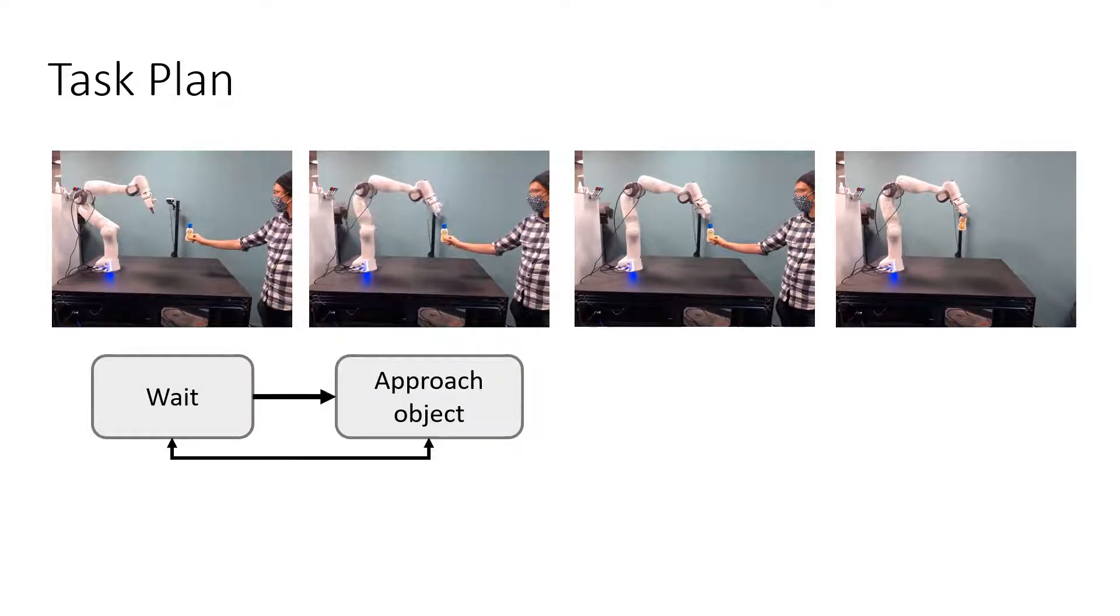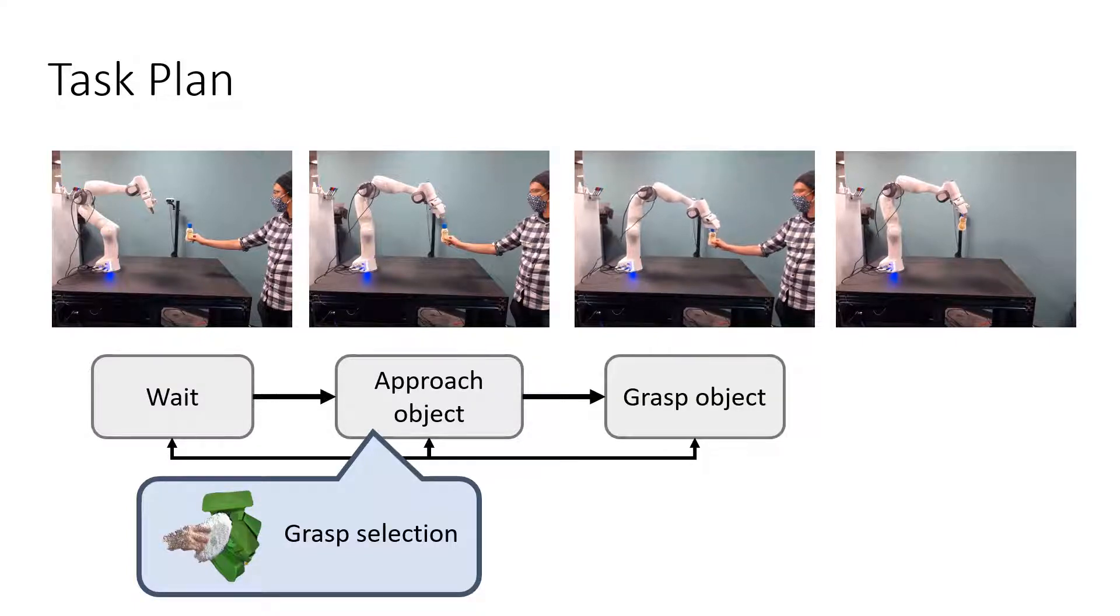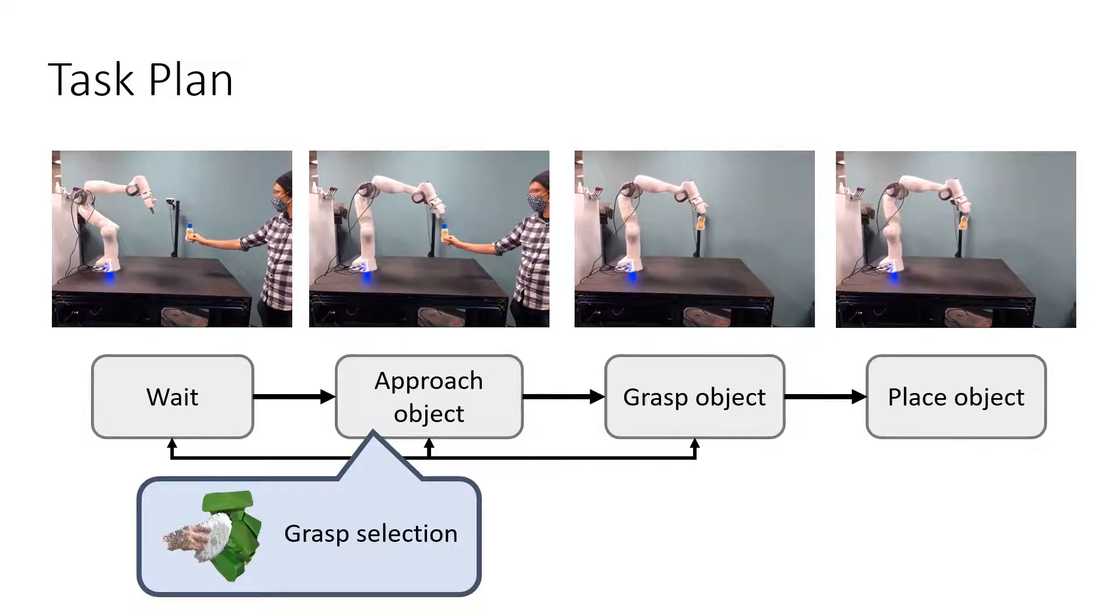Next, it chooses an approach position and moves to this position along a collision-free path. This involves grasp selection, choosing from all available grasps predicted by GraspNet to find the best possible grasp. Once it arrives at this approach position, it will make an open loop attempt to grasp. And finally, if it has successfully grasped the object, it will attempt to place it on the table.